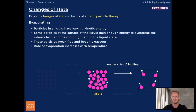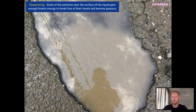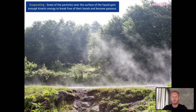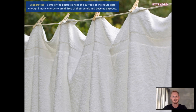Next, evaporation — another way in which a liquid turns into a gas. Unlike boiling, evaporation only takes place on the surface of a liquid and occurs at a range of temperatures at and below the boiling point. For example, water evaporates from the surface of puddles at temperatures well below the boiling point of water. This is because in liquids, particles don't all have the same kinetic energy. As they move and collide, some particles at the surface gain enough energy to escape the attractive forces of the liquid and become gaseous. Raising the temperature increases the average kinetic energy of the particles, leading to higher rates of evaporation — which is why your towel dries faster on a sunny day.